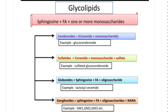The third type is globosides — their composition is sphingosine plus fatty acid plus oligosaccharide, meaning they contain more than one monosaccharide, which may be glucose or galactose. An example is lactosyl ceramide, which contains both glucose and galactose. The fourth type is gangliosides — these are complex glycolipids with a composition of sphingosine, fatty acid, oligosaccharide, and NANA (N-acetylneuraminic acid), a nine-carbon compound. An example is GM1, the most common ganglioside.